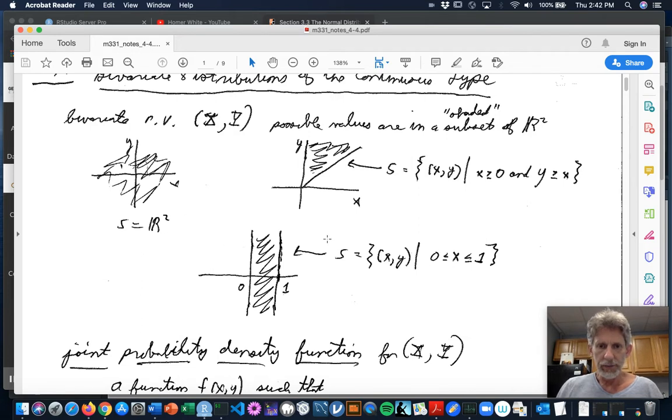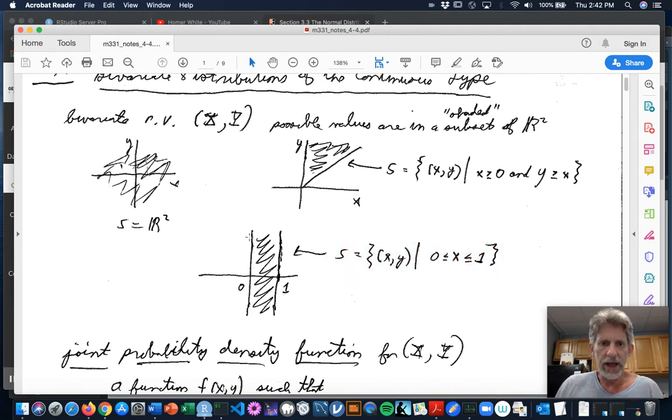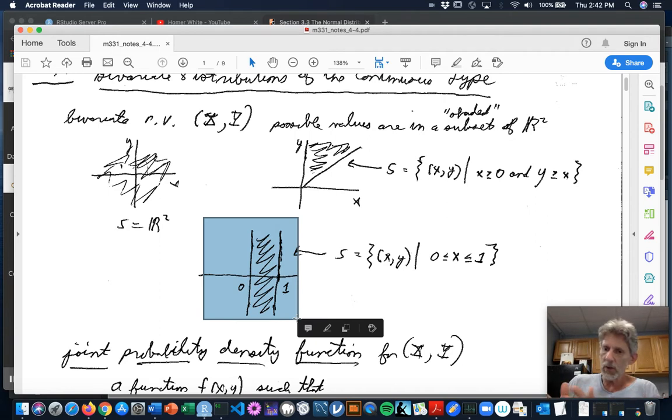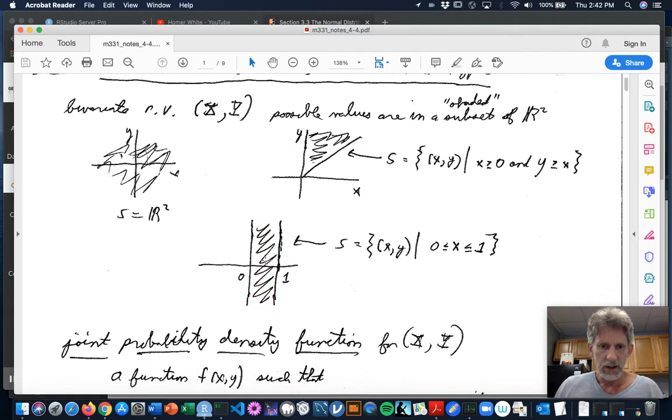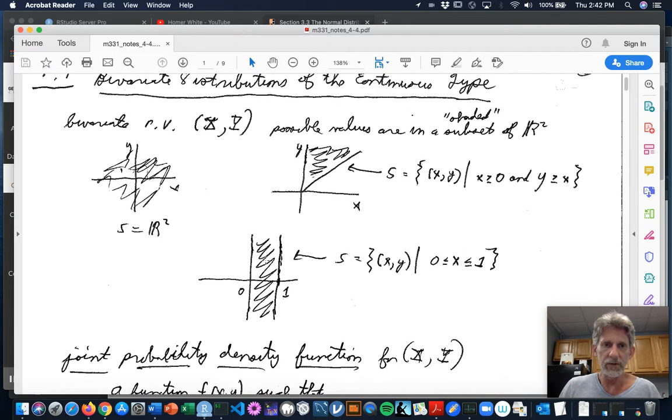Or how about sample space could be the set of all XY where X is between 0 and 1, Y isn't mentioned. That means that if you graphed it, the X coordinate of your points has to be between 0 and 1. The Y coordinates could be anything because there was no constraint put on the Y. And so you get this sort of infinite up and down strip. So anyway, shaded regions like that form your sample space when we're talking about these random variables.